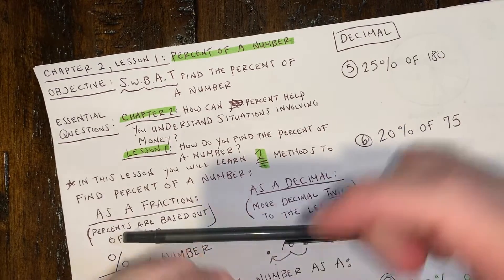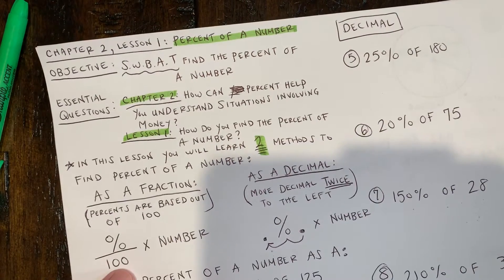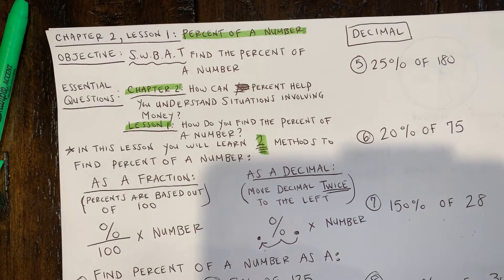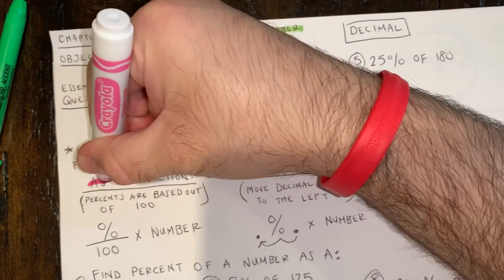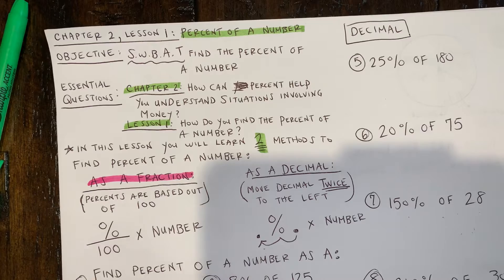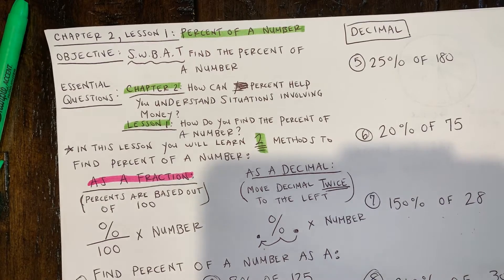So the two methods that we're going to be using are learning how to find the percent of a number as a fraction. But then we're also going to learn how to find the percent of a number as a decimal.